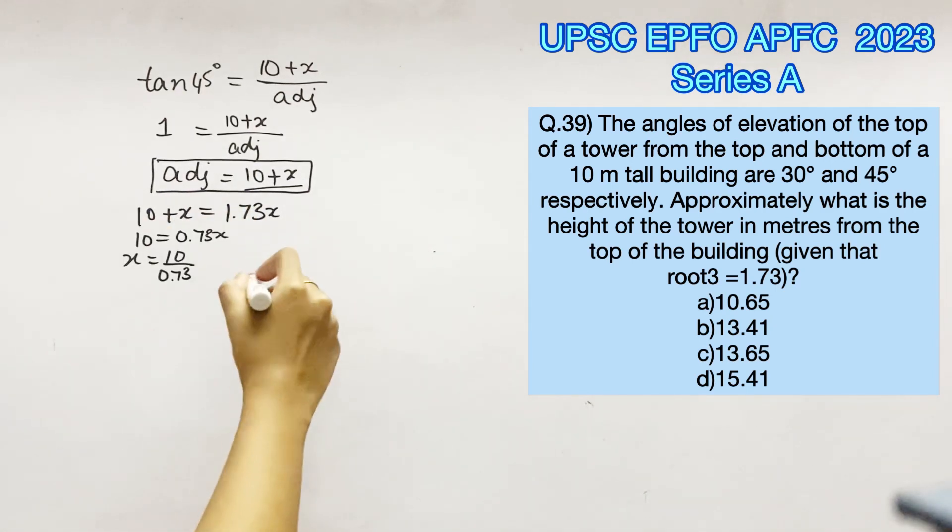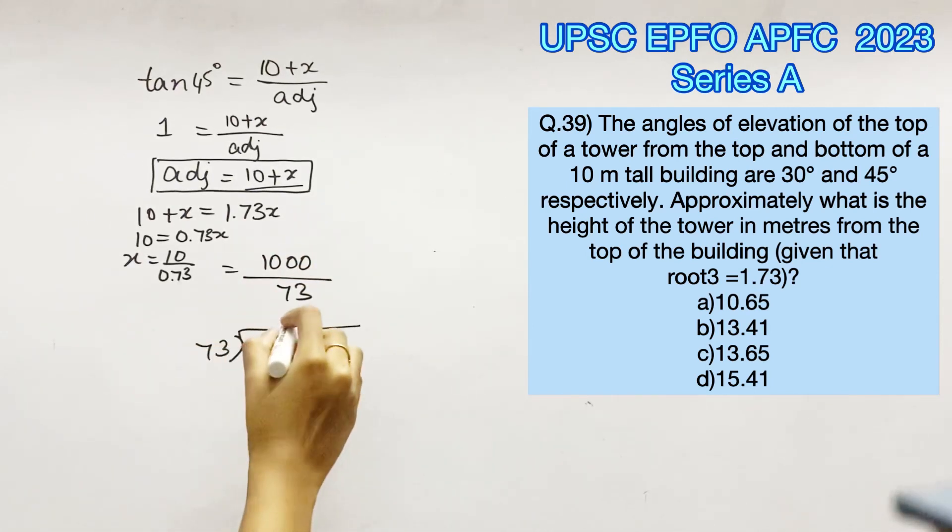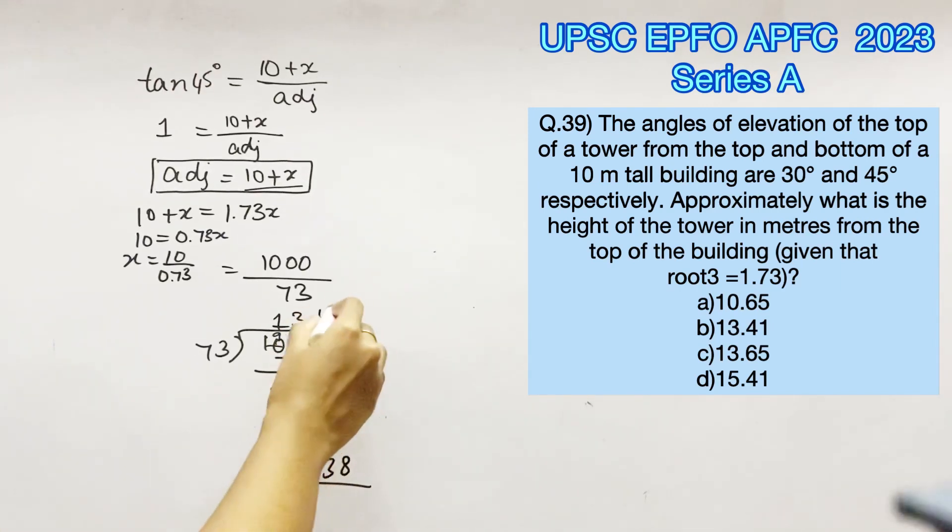Equating for x we get 10 equals 0.73 x, so the value of x is 10 by 0.73, that is 1000 by 73. Dividing 1000 by 73 we get 13.6, therefore option C is the right answer.